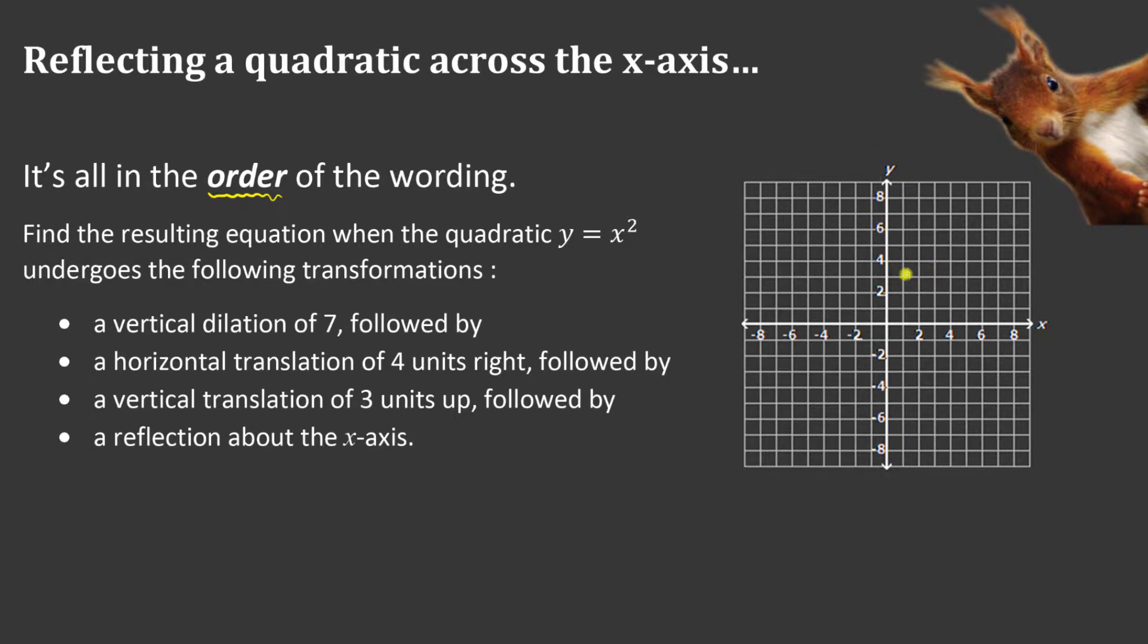You'll see how wonderful my art skills are. So we're going to do two examples, and I'm going to show you why the order of the words matter. So we're going to find the resulting equation when our parent function, y equals x squared, this quadratic, undergoes the following transformation.